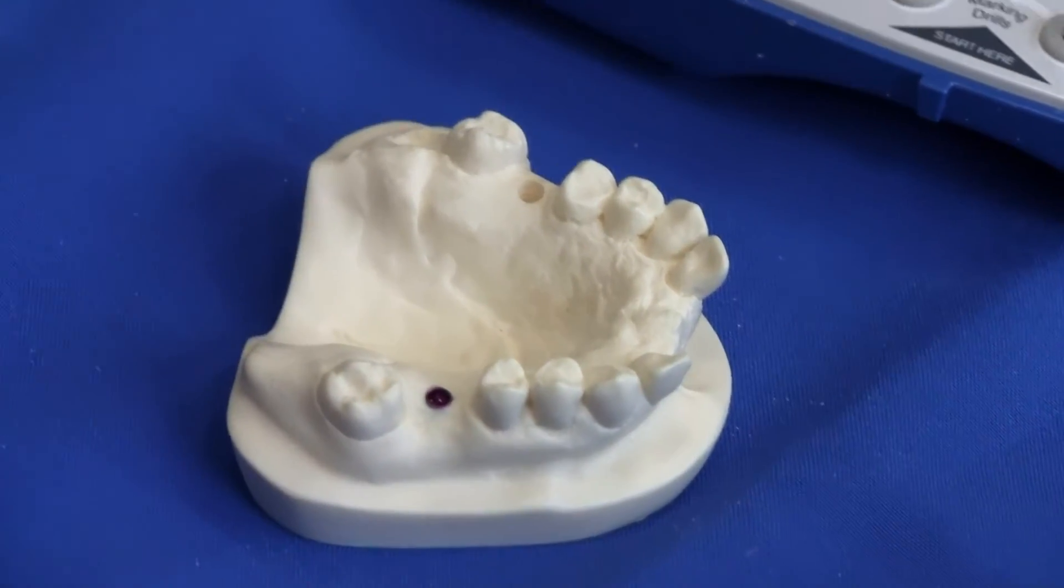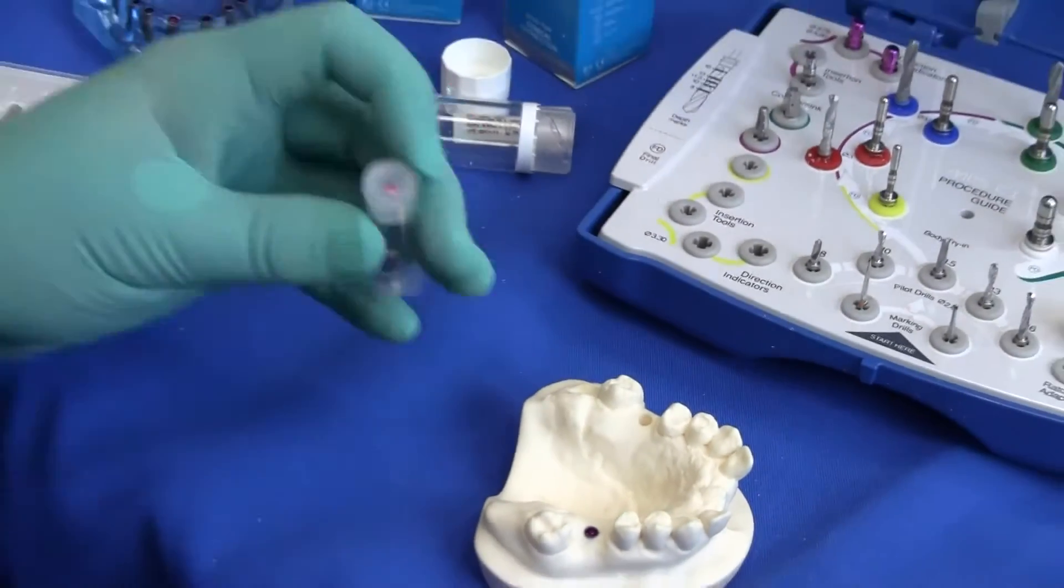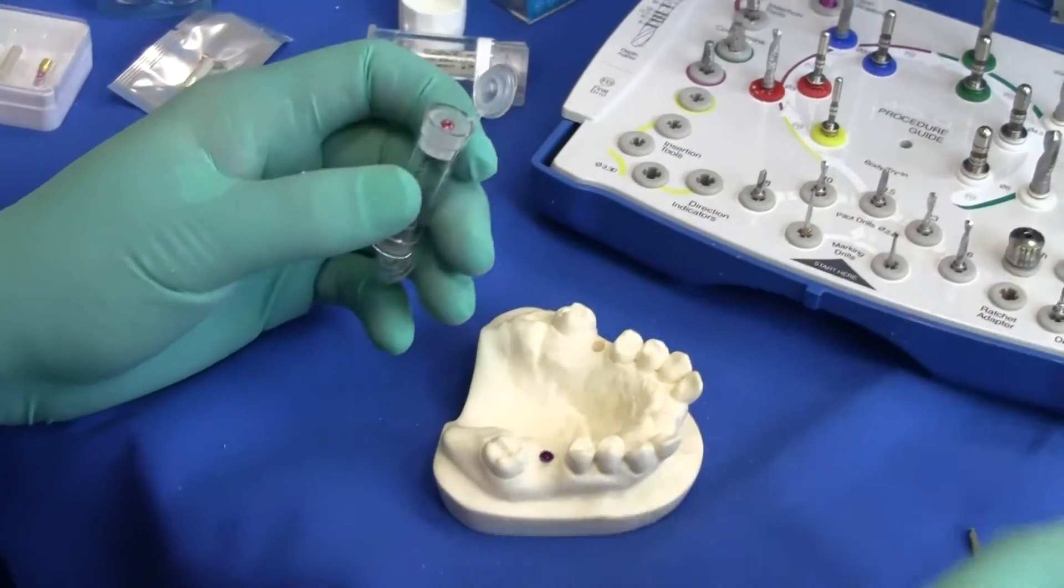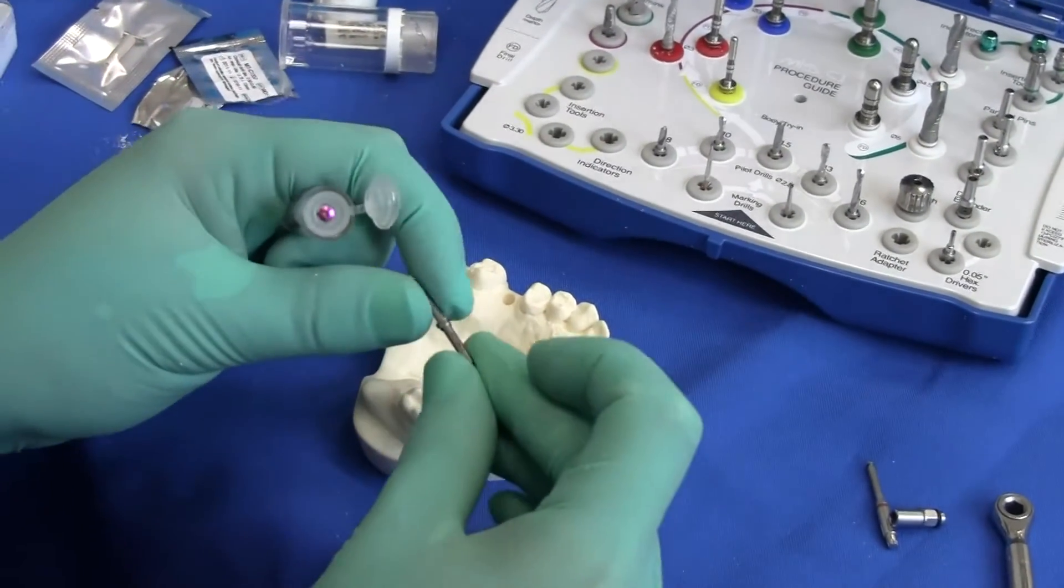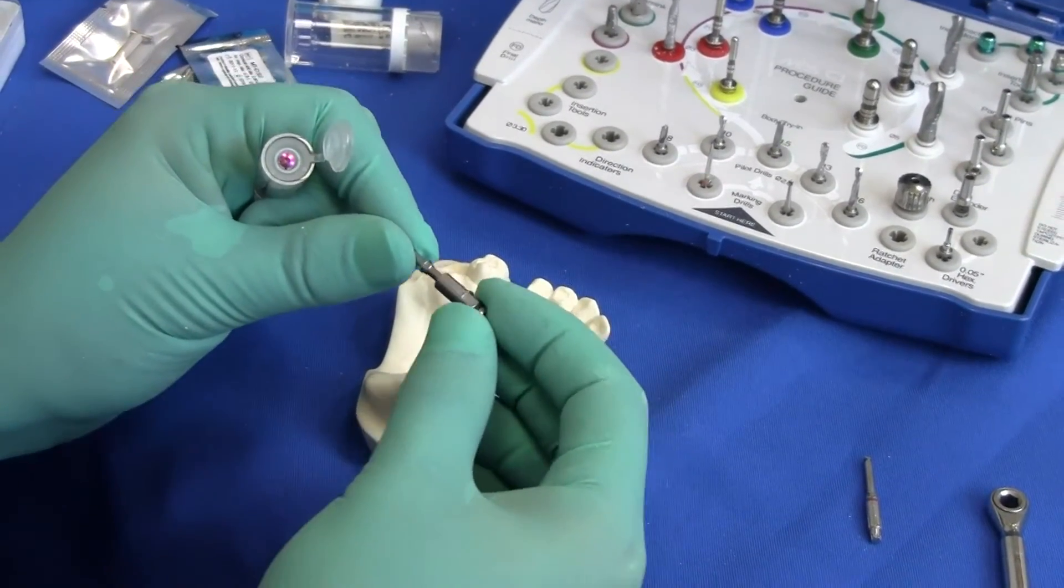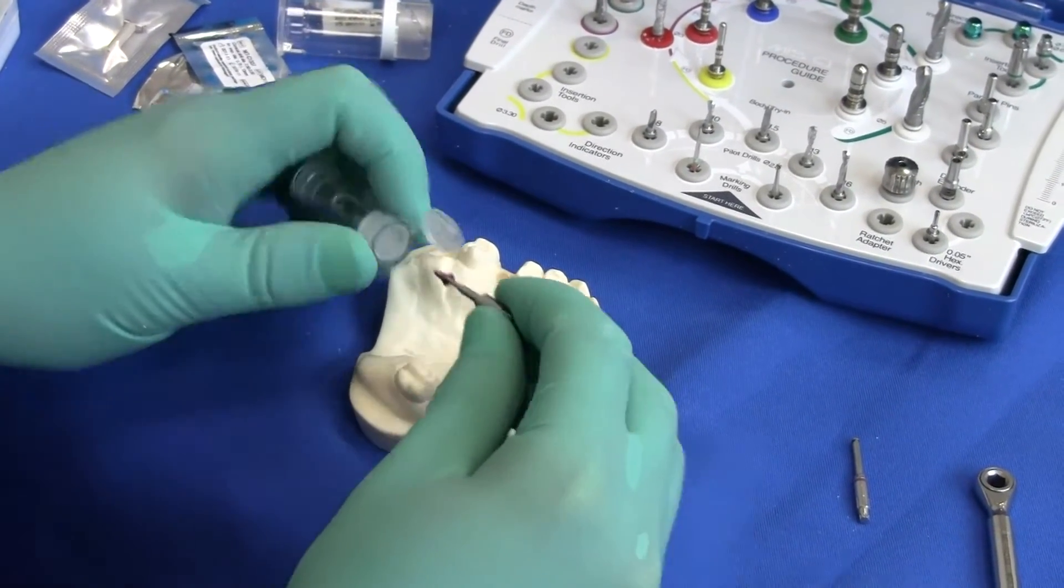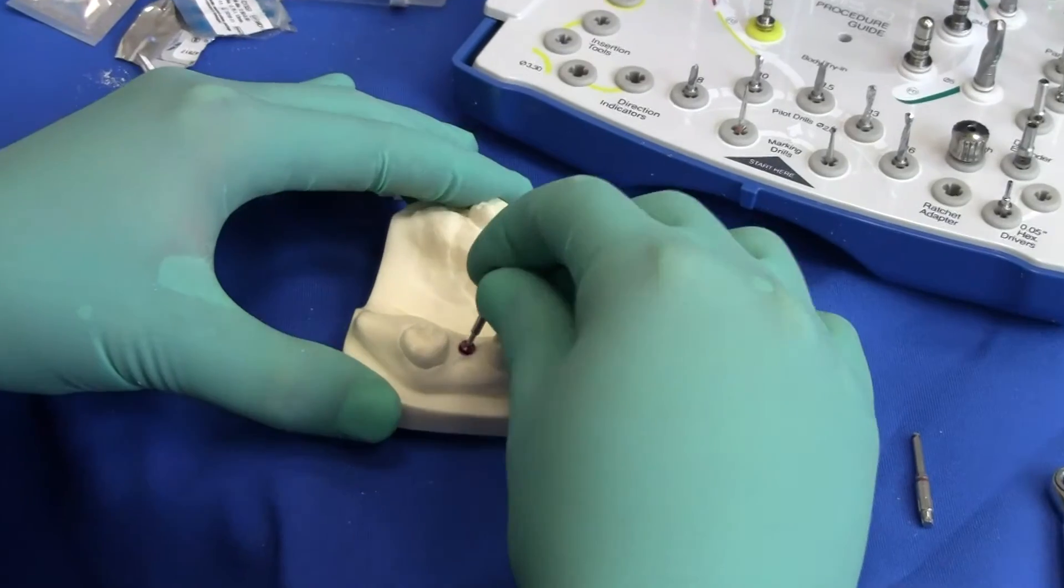Each C1 implant also comes with its own cover screw, color-coded as well. So you can either place that with our handpiece or using the same adapter with the wrench. Start placing it just like this.